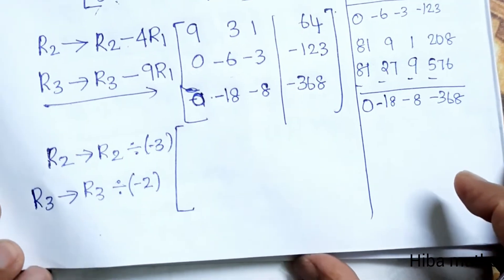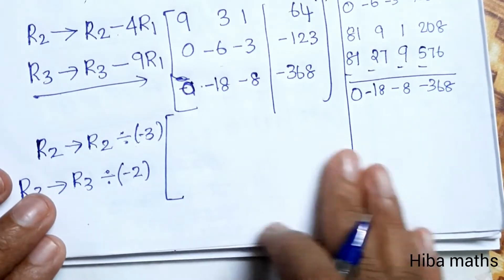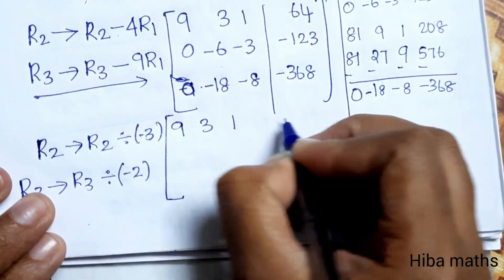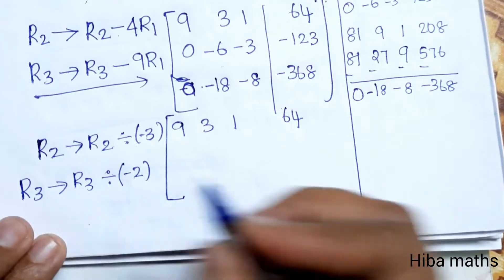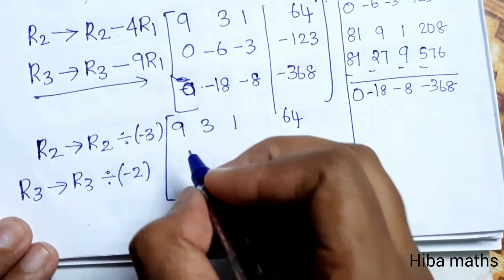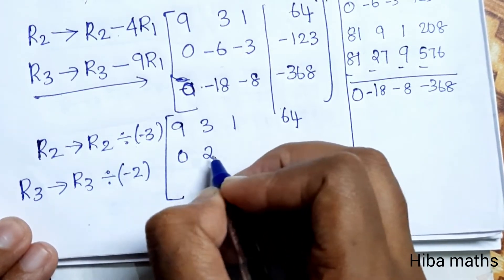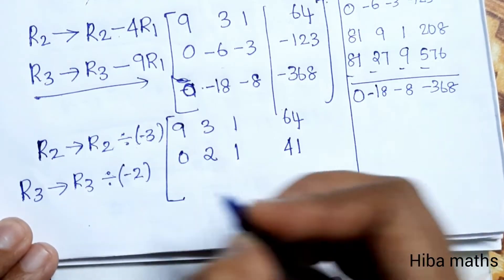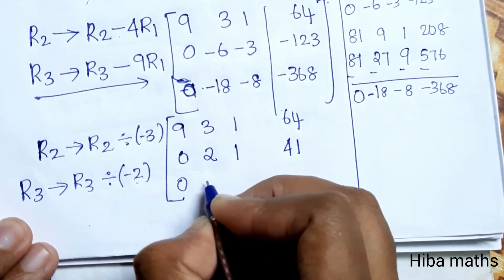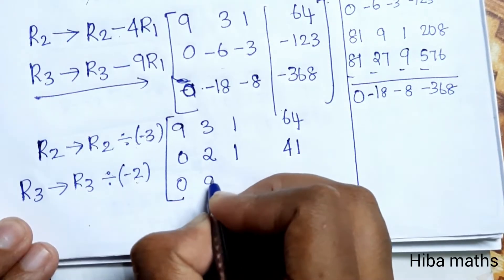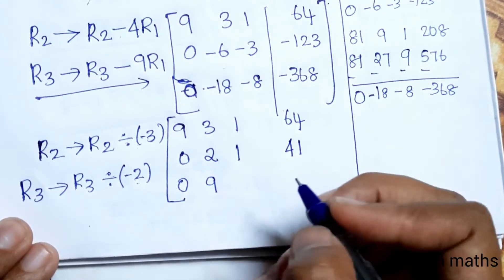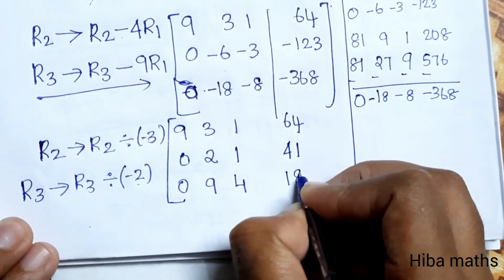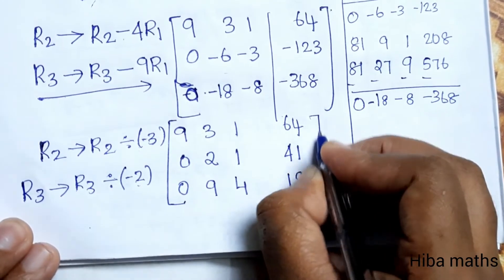Row 1 stays unchanged: [9, 3, 1 | 64]. After R2 ÷ (-3): 0, (-6)/(-3)=2, (-3)/(-3)=1, (-123)/(-3)=41. So R2 becomes [0, 2, 1 | 41]. After R3 ÷ (-2): 0, (-18)/(-2)=9, (-8)/(-2)=4, (-368)/(-2)=184. So R3 becomes [0, 9, 4 | 184].